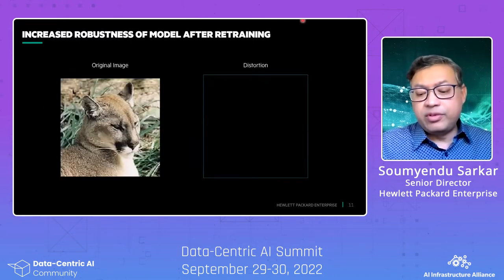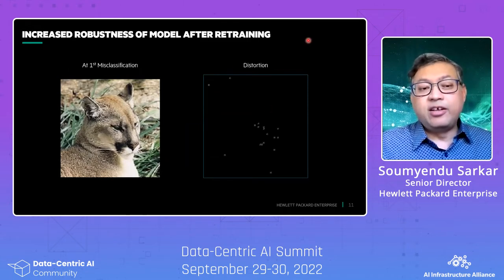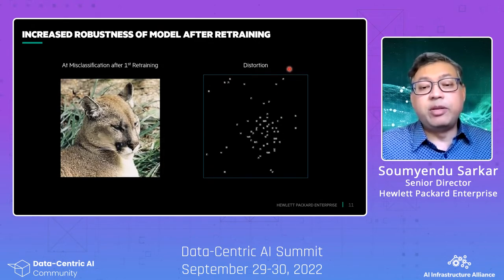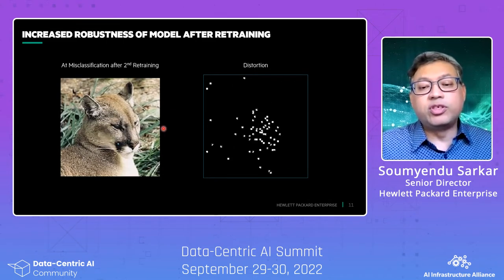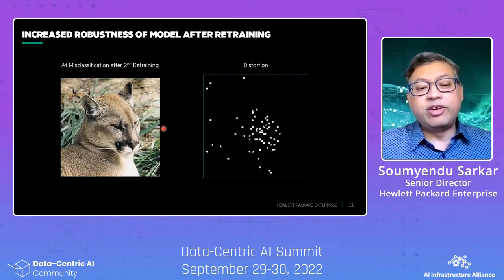To recapitulate: the original image has no distortion. For the untrained model, with a little distortion we get the flip. Then after we do the first retraining, it needs much more distortion to cause the flip. And then it needs even more distortion after the second retraining.